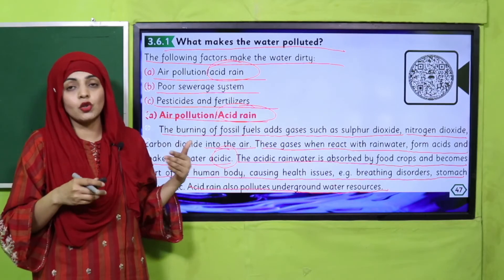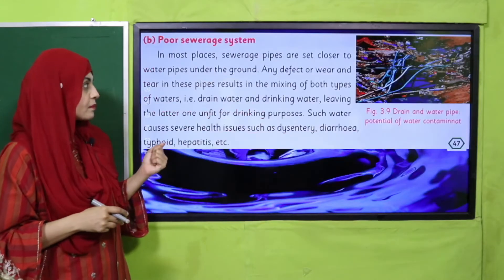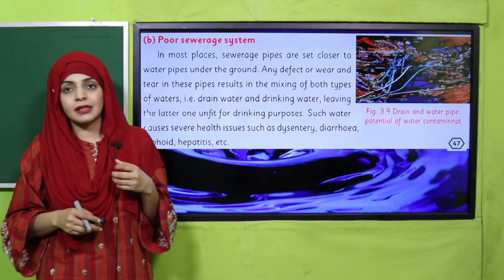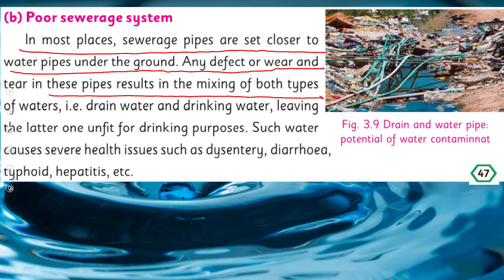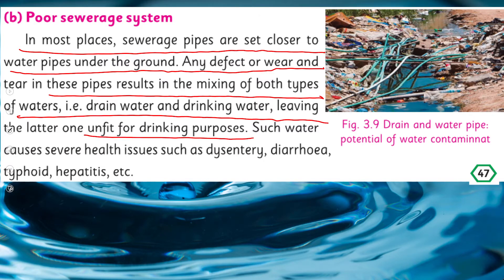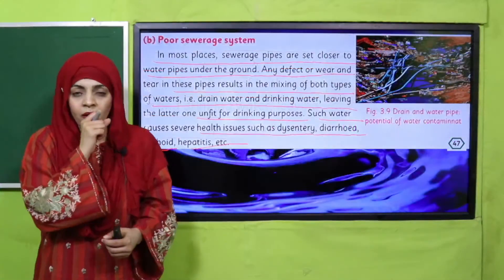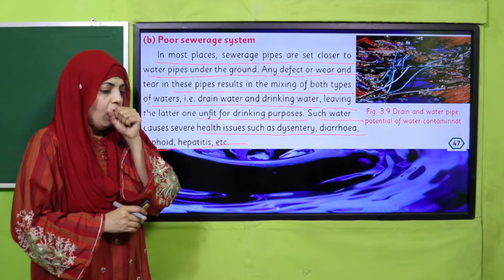Next is the poor sewerage system. In most places, sewerage pipes are set closer to water pipes underground. Any defect or wear and tear in these pipes results in the mixing of both types of water — that is, drain water and drinking water — leaving the drinking water unfit for drinking. Such water causes severe health issues such as dysentery, diarrhea, typhoid, and hepatitis.